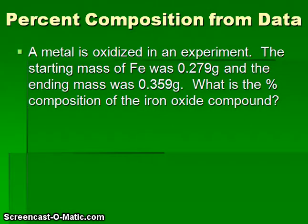Another calculation type we will work on is percent composition from experimental data. So here's our example scenario. We have a metal which is being reacted. It's oxidizing in an experiment. And we're using iron. So the starting mass of the iron was 0.279 grams. And the ending mass of the compound produced, which would be iron oxide, was 0.359 grams.